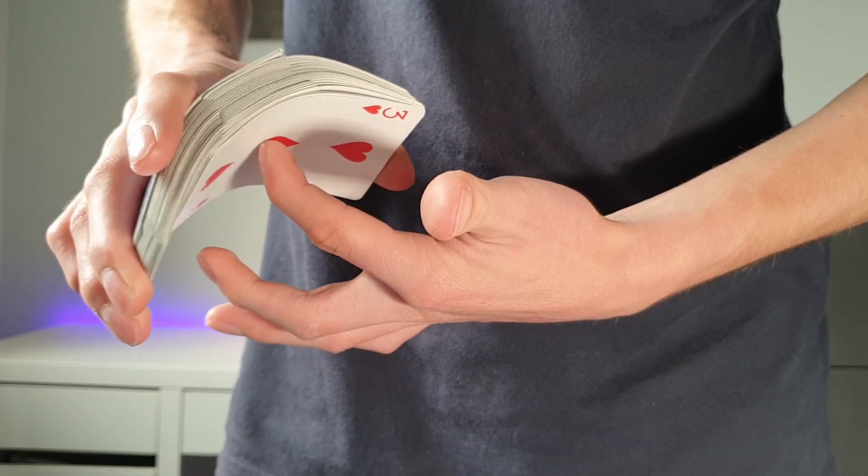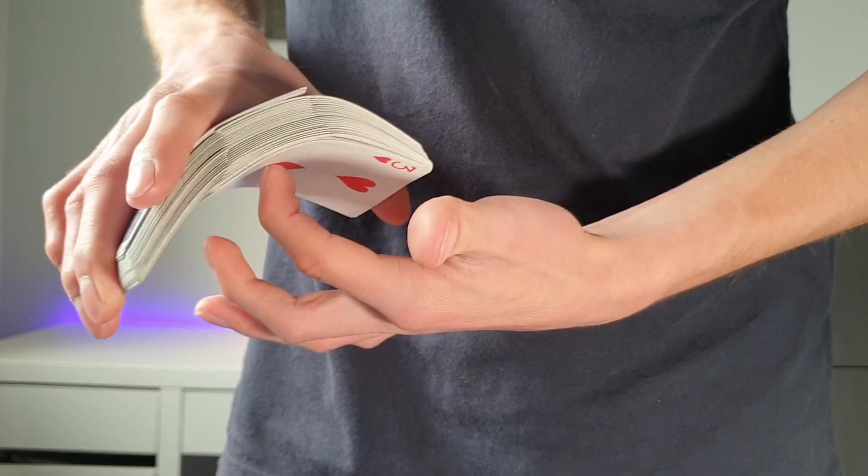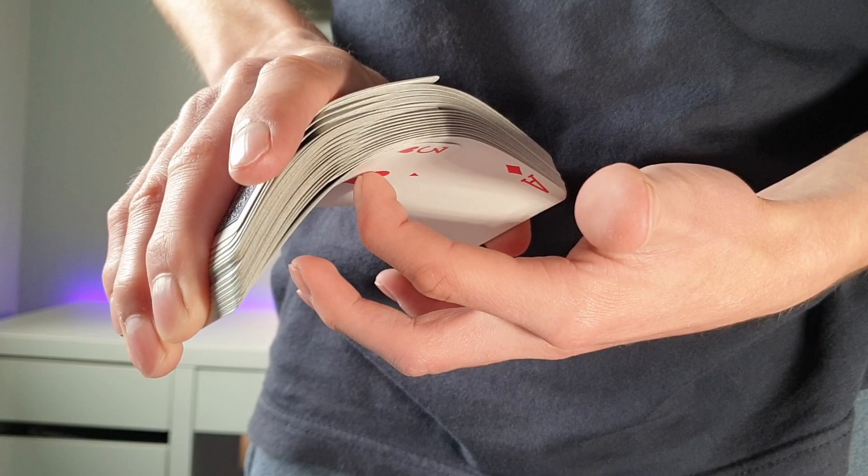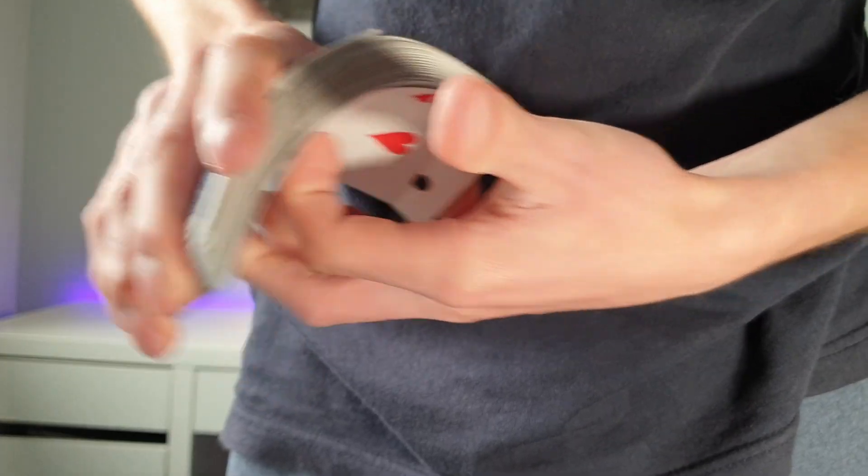I use my index finger to sort of push against here, creating the bridge as you can see. Okay, so once we let go the index finger, we squeeze the cards and slowly release pressure.